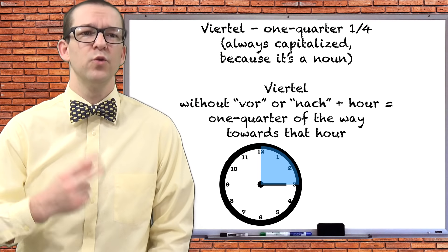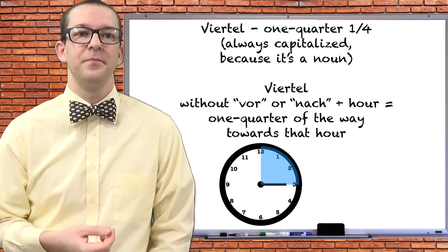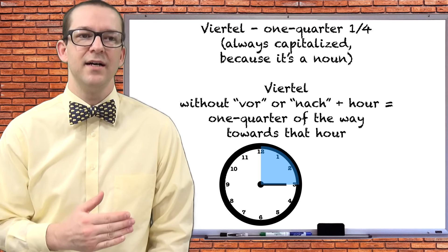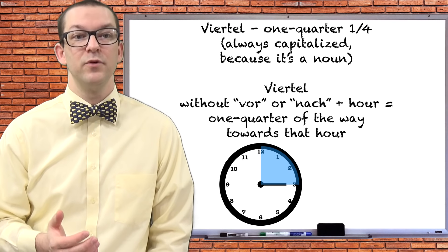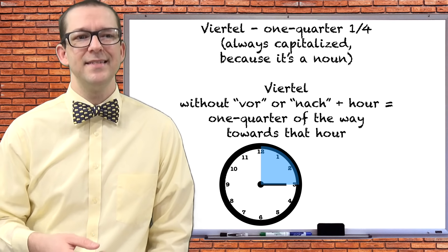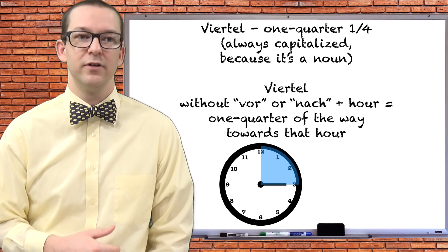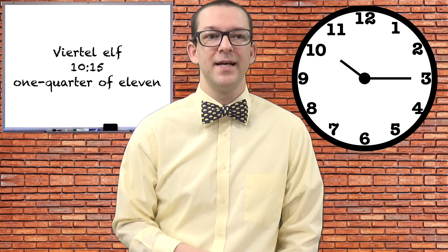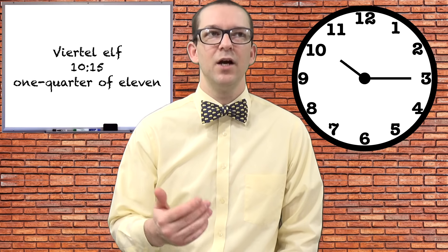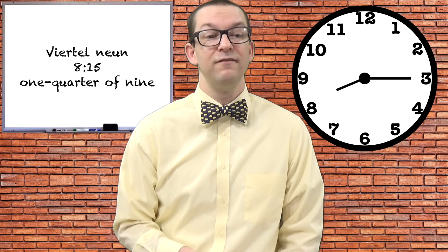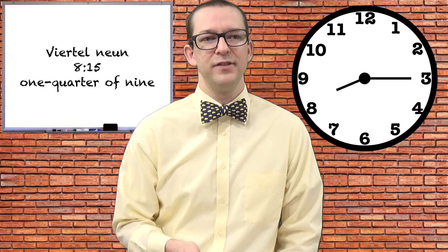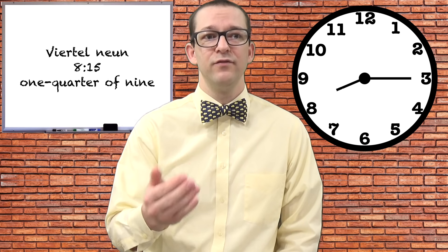There are also two weird ways to use the word viertel. If you leave out the words vor or nach, you have a similar math question to that which we used with halb. In these examples, the phrase becomes a quarter of the way towards a particular hour. For example, viertel elf, 10:15, literally a quarter of eleven. Viertel neun, 8:15, literally a quarter of nine.